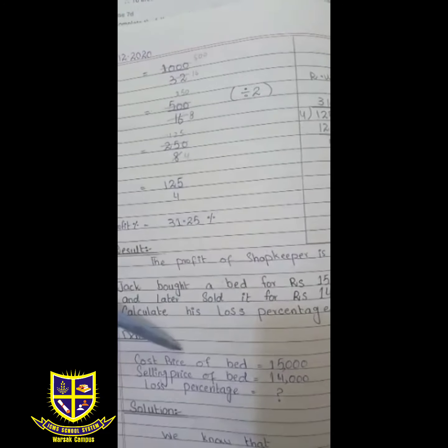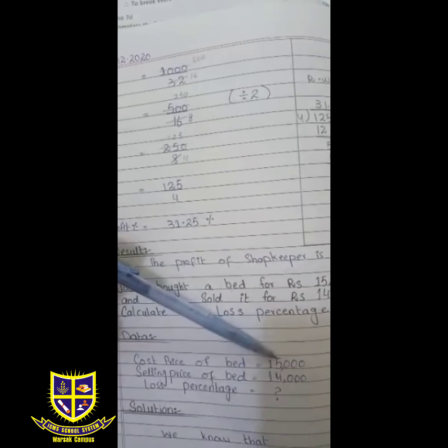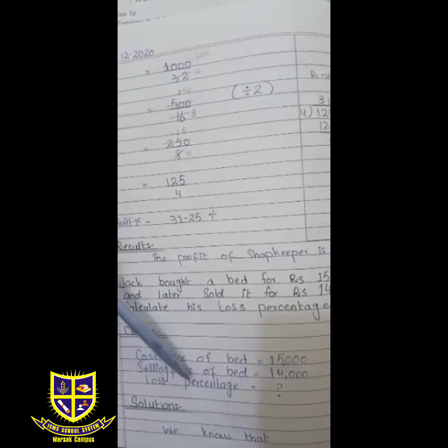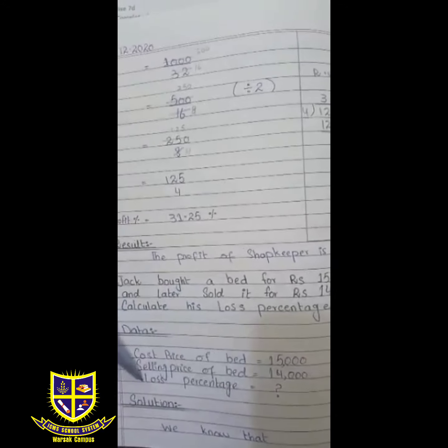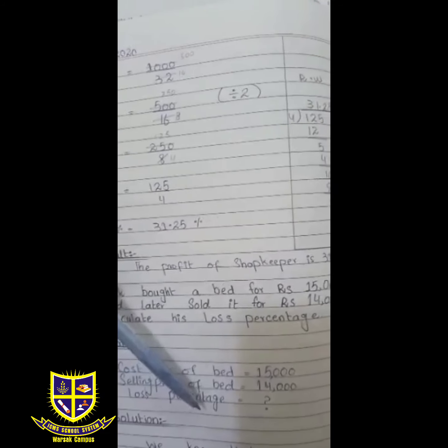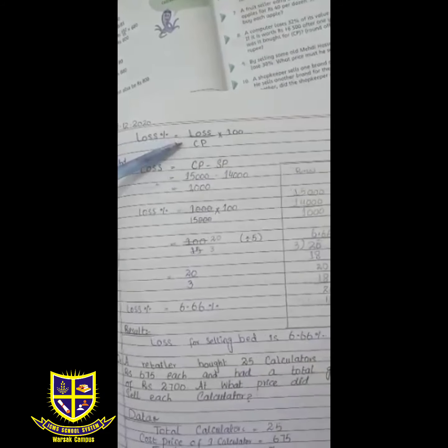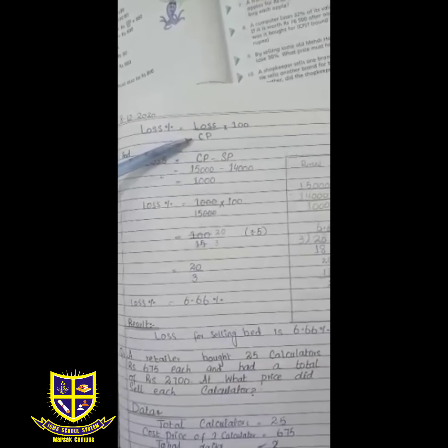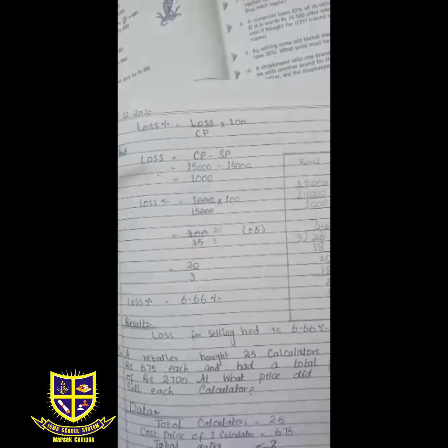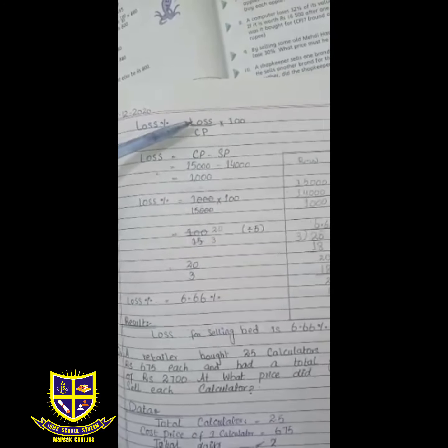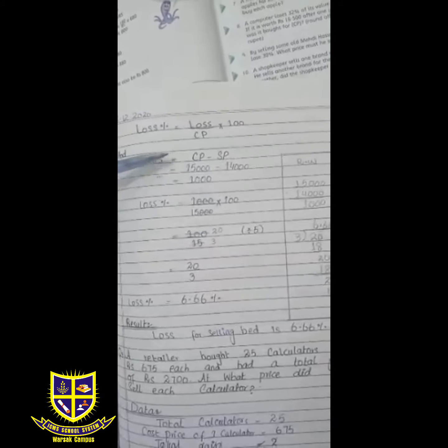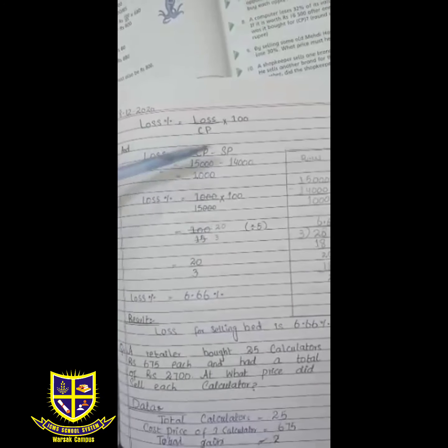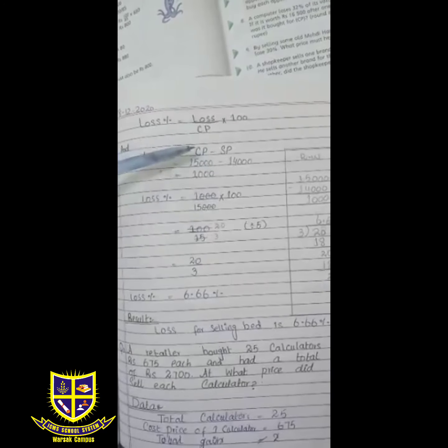Data: Cost price of bed is rupees 15,000. Selling price of bed is 14,000. Loss percentage is equal to question mark. Solution: We know that loss percentage is equal to loss divided by CP, which is cost price, multiplied by 100. For this formula, first we will find loss. Loss formula is CP minus SP.